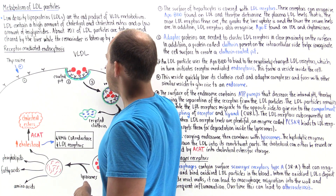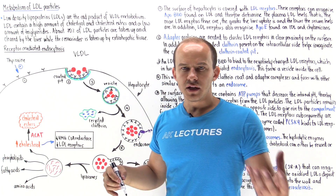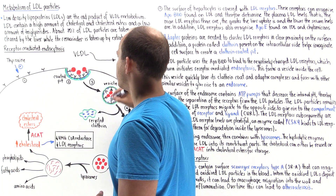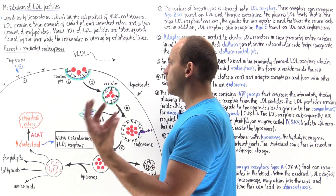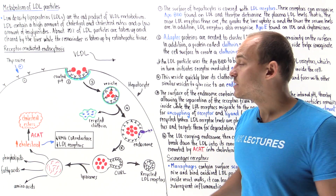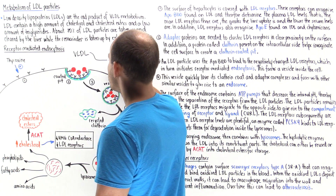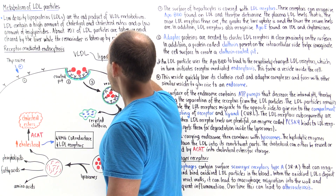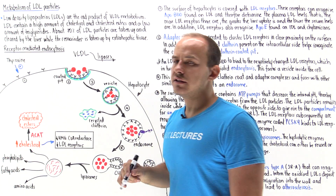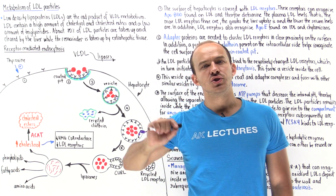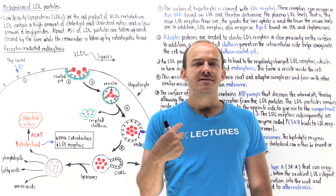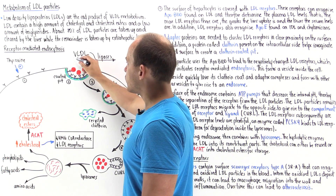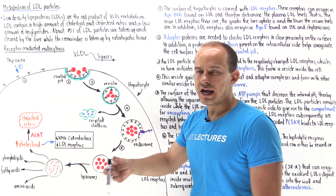Liver cells produce VLDLs and then release them into the bloodstream, and the VLDLs move in the bloodstream to capillaries of places like cardiac tissue, skeletal muscle tissue, and adipose tissue, and there we have lipoprotein lipases. These lipases break down the triglycerides in the VLDL into fatty acids. The fatty acids are then absorbed by that extra-hepatic tissue, and then this process happens over and over again.